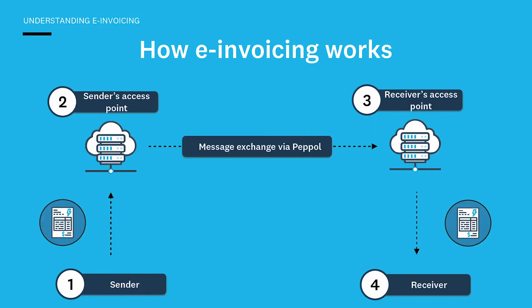How does e-invoicing work? It works by using access points. On this diagram here, up at the top at points two and three, these are two access point providers. An access point provider is a connectivity service that links businesses to the PEPL network. PEPL is an international standard that allows businesses to speak to each other. PEPL is used by businesses in many other countries as well, so it also helps Singapore businesses transact internationally as well as domestically. Following this diagram from point one in the bottom left — as a seller, you create the invoice in your accounting software, that invoice goes to your access point, the message is sent automatically to the customer's access point, and from there the invoice is sent automatically into your customer's accounting software.